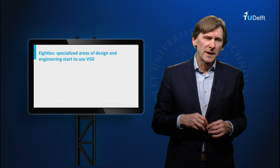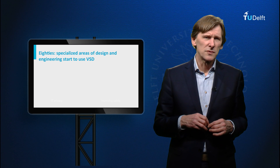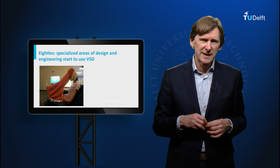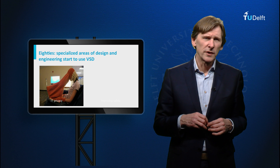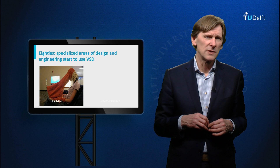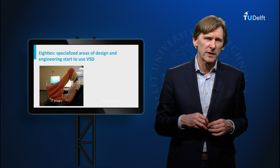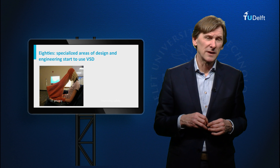Some specialized areas of design and engineering in the 1980s also started to use the design-for-values or value-sensitive design idea concretely. One example is privacy-enhancing technology: a number of privacy scholars started to work on ways to design IT systems and applications so that the likelihood that users would comply with privacy norms would increase. Instead of relying on the good will of users, the artefacts themselves would make it more probable that they would be in compliance.